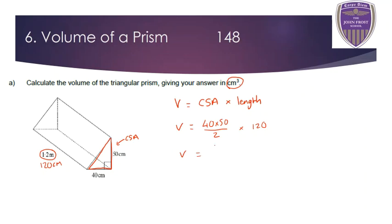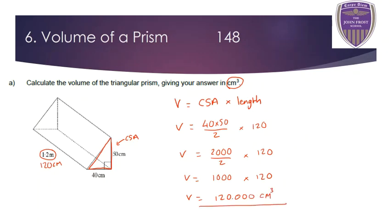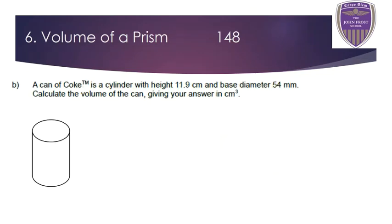Doing 40 × 50 = 2,000, then dividing by 2 gives 1,000. Multiplying by the length of 120 gives a final volume of 120,000 centimetres cubed. Another prism is a cylinder — like a can of Coke or a tube of Pringles. It has a circular cross-section. To find the volume, it's cross-section area multiplied by the height, which is 11.9 centimetres.